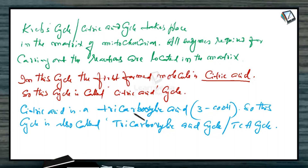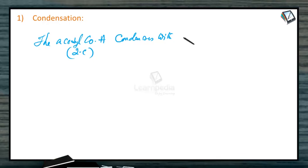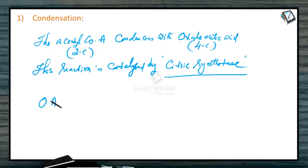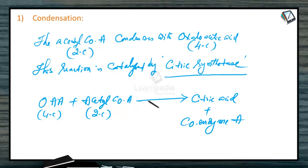Now let us see the reactions taking place in the Krebs cycle. The first reaction is condensation. Acetyl coenzyme A, which is a two-carbon compound, condenses with an organic acid called oxaloacetic acid, a four-carbon compound. This reaction is catalyzed by the enzyme citrate synthetase. So oxaloacetic acid (4-carbon) plus acetyl coenzyme A (2-carbon) results in the production of citric acid, and coenzyme A is released. Citric acid is a six-carbon compound with three carboxylic groups.